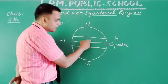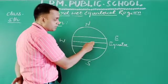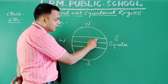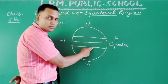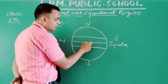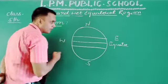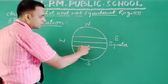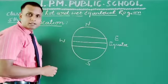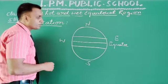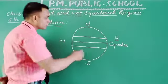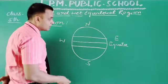This is 10 degrees north. We are talking about 10 degrees north to the equator and 10 degrees south to the equator — these two particular regions together form the hot and wet equatorial region.